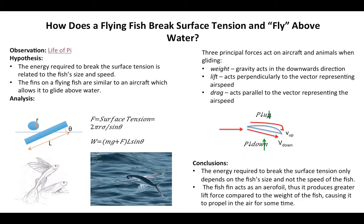We are going to talk about how a flying fish breaks surface tension and flies above water, and we are going to look at two perspectives in terms of hypothesis. We will look at how much energy the fish requires to break the surface tension and relate it with the fish size and speed, and also make an assumption that the fish fins are similar to an aerofoil of an aircraft, which allows it to glide above water for some time.